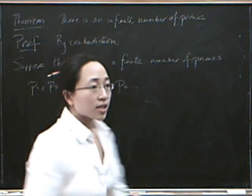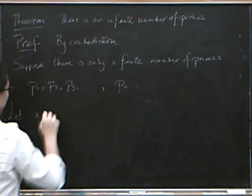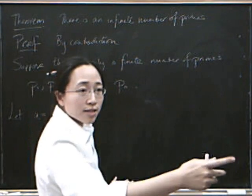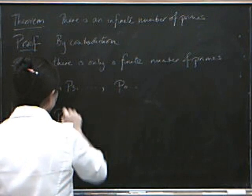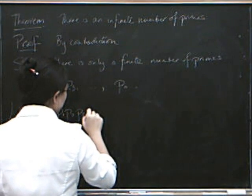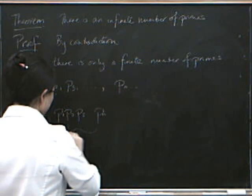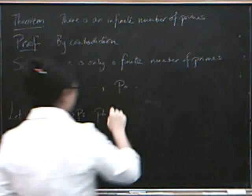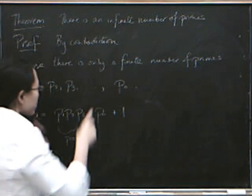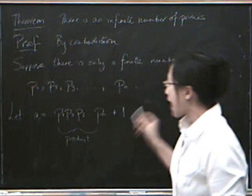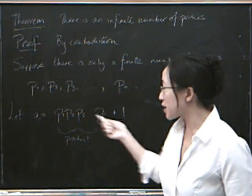In that case, what I'm going to do is I'm going to produce another number. Let a equal, I'm just going to multiply all these numbers together and add 1. Let a equal p1 times p2 times p3 times pn. So that's the product of all the primes. And I'm going to add 1.